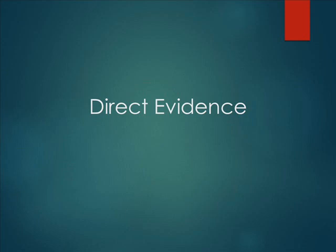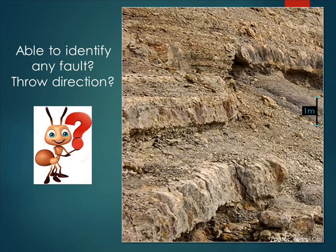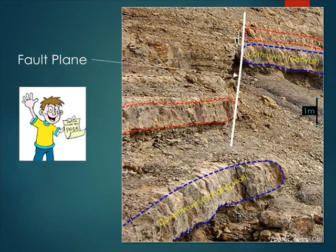I'm just going to show you some examples. So the first one — just take a minute and look at this. Do you see any evidence of faulting, or can you make out the true direction? So what we see here is that the red and blue stratigraphic units on the left have been upthrown — that's the footwall — while on the right has been downthrown. So across the thick white line, which we've interpreted as the fault plane, these rock units have been downthrown to our right across the white line.